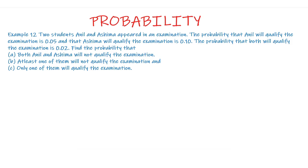Two students, Anil and Asima, appeared in an examination. The probability that Anil will qualify the examination is 0.05 and that Asima will qualify the examination is 0.10. The probability that both will qualify the examination is 0.02. Find the probability that: part A, both Anil and Asima will not qualify the examination; part B, at least one of them will not qualify the examination; and part C, only one of them will qualify the examination.